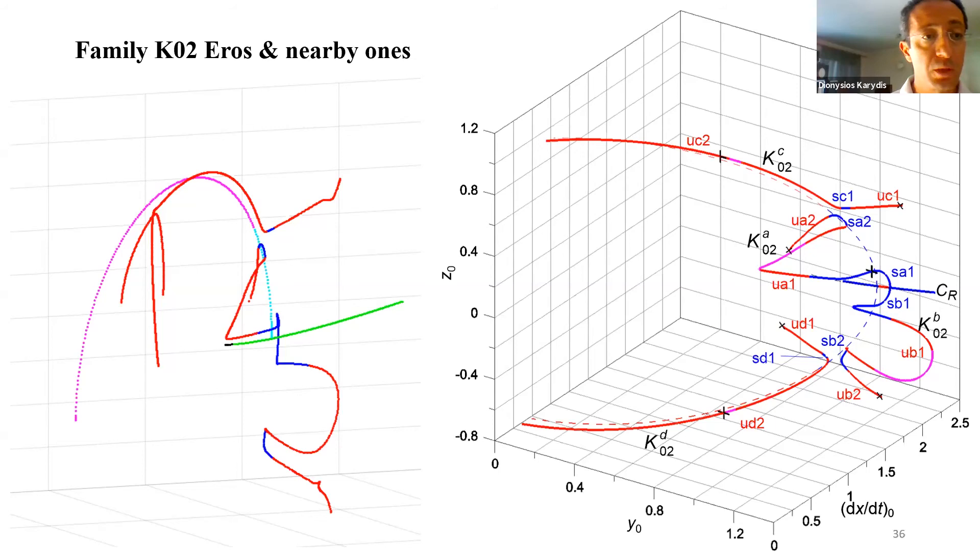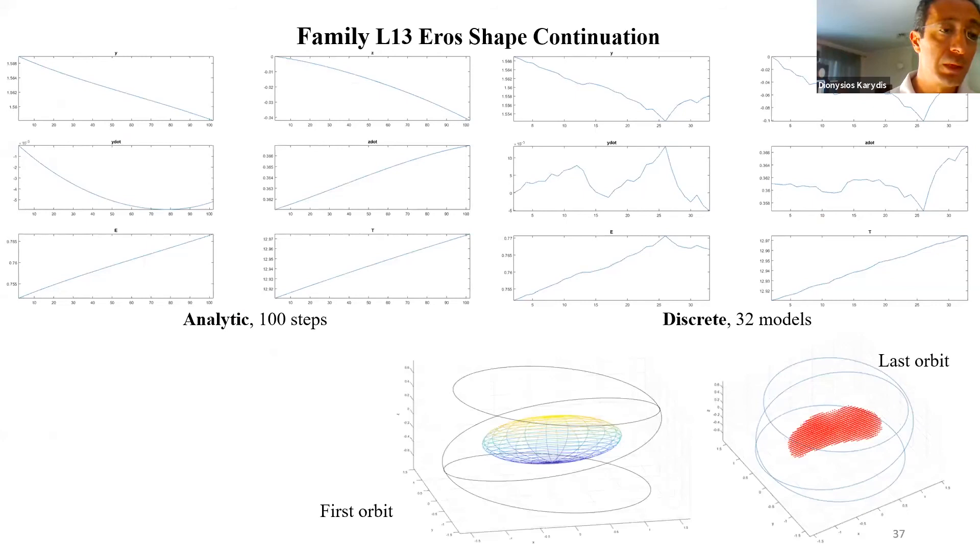Starting from an even higher multiplicity, here it is three. We have family L13 of Eros. We see that both the analytic and the discrete kind of shape continuation performed well. The first and the last orbit of this process are both shown here. Three sample orbits are presented here.